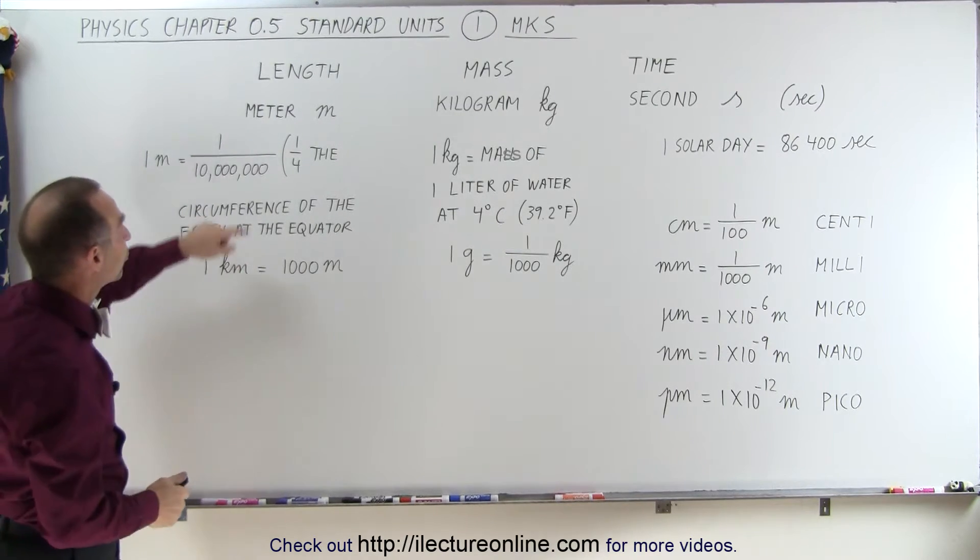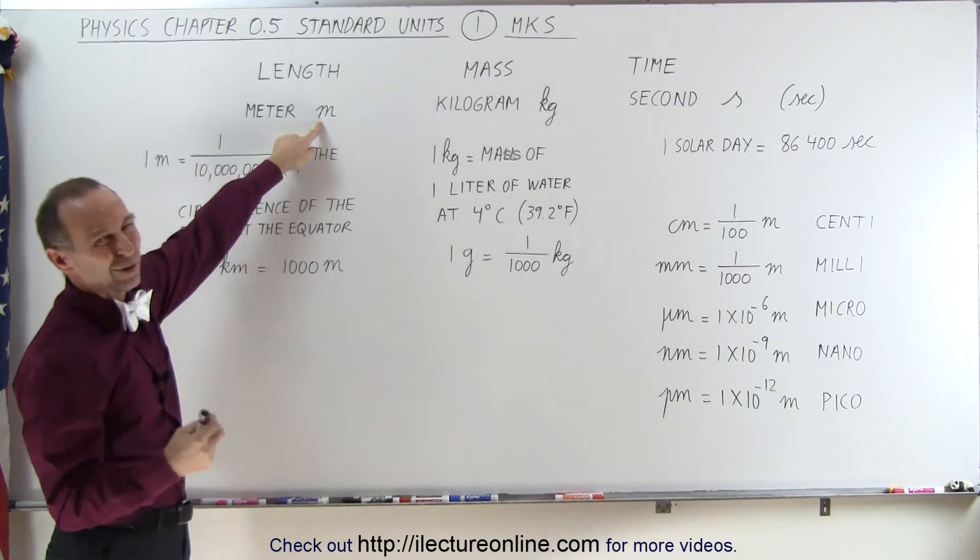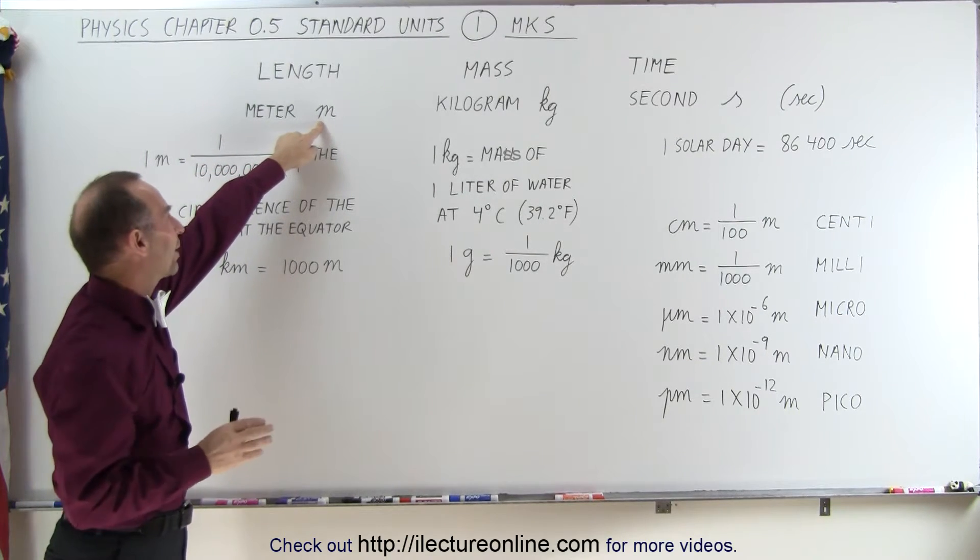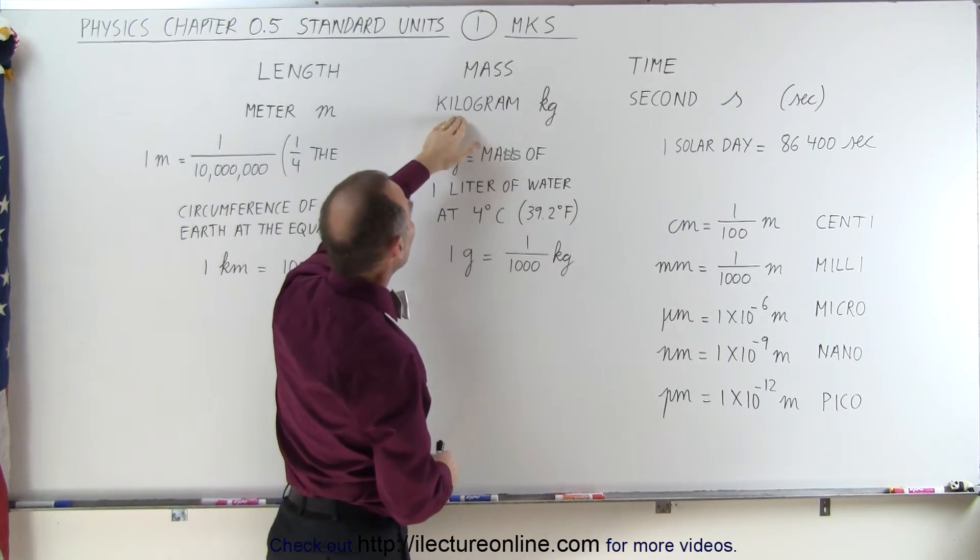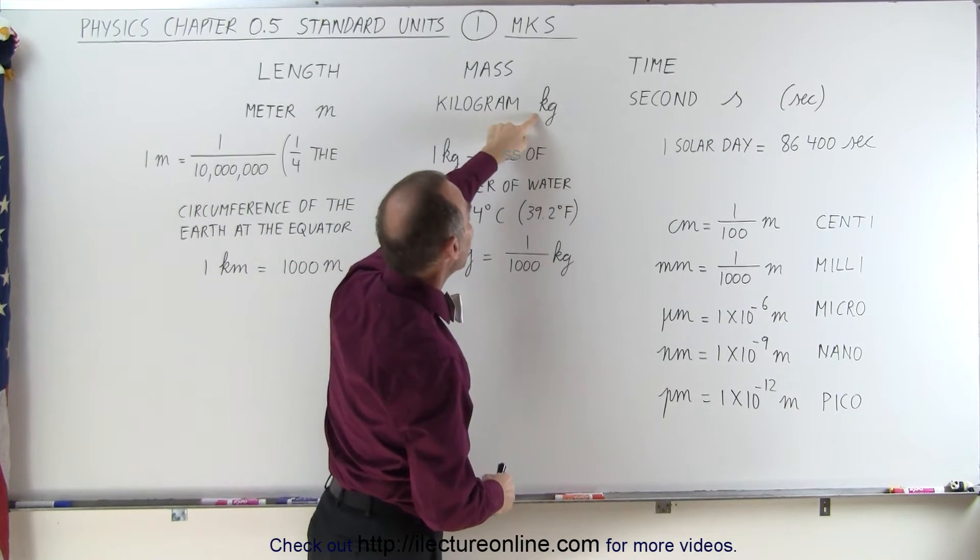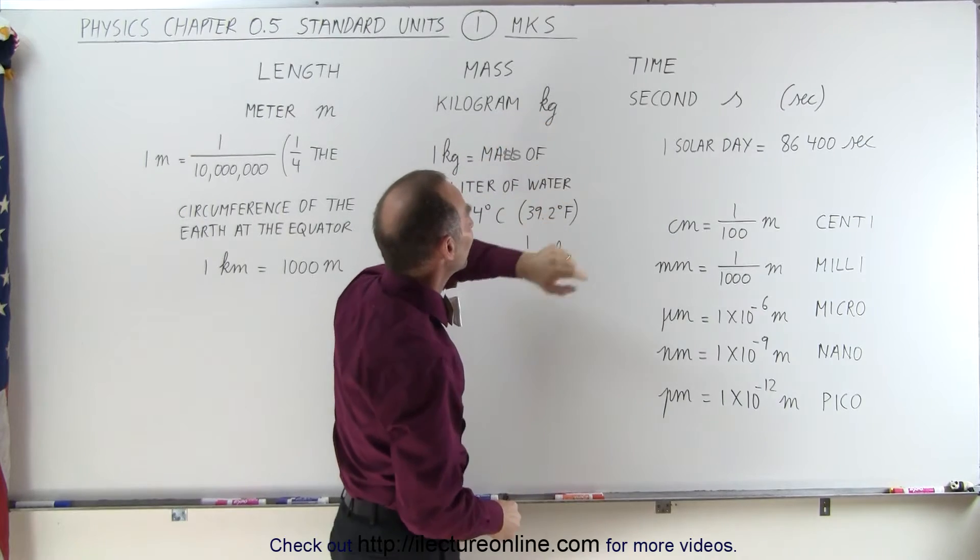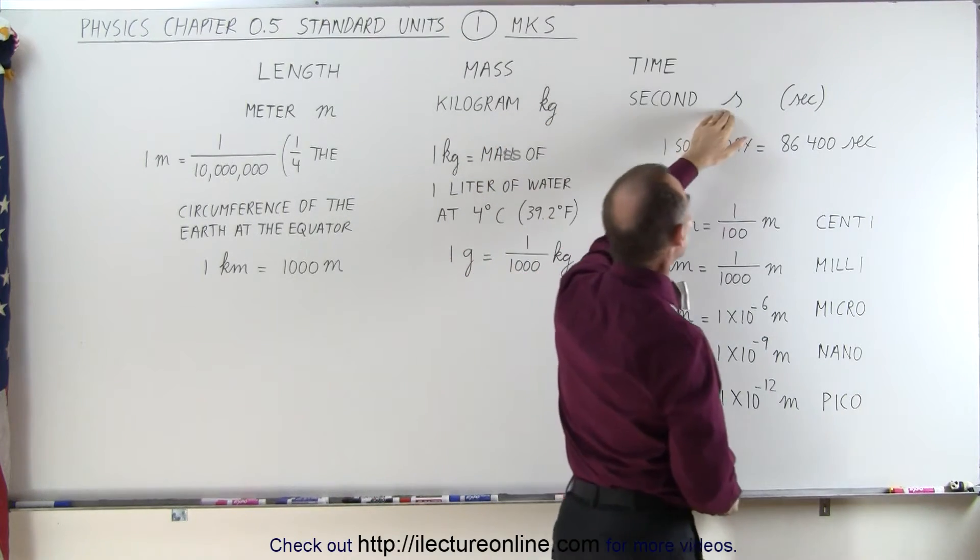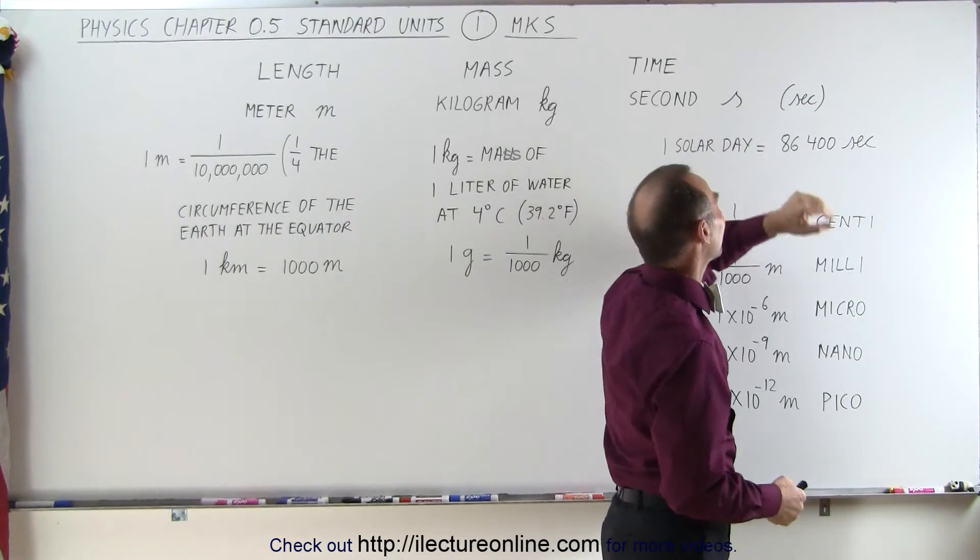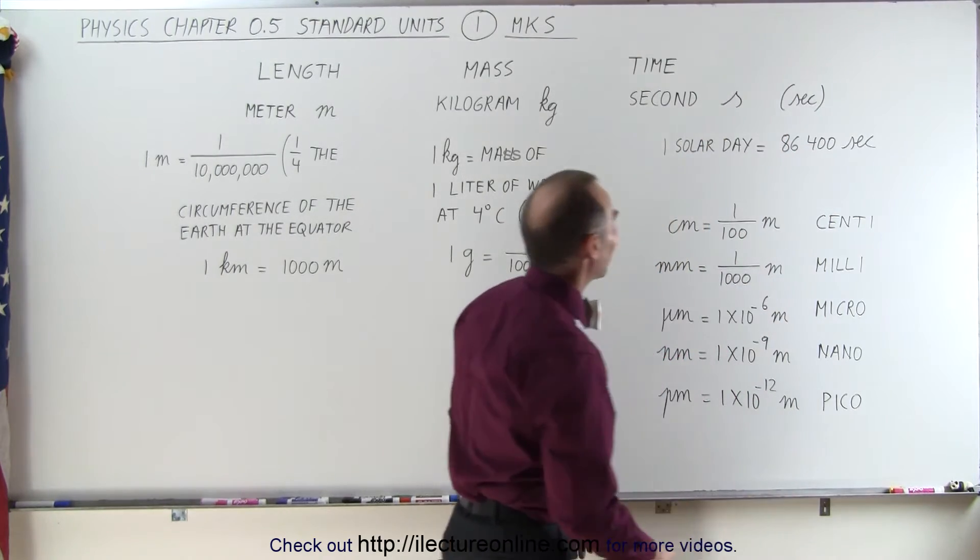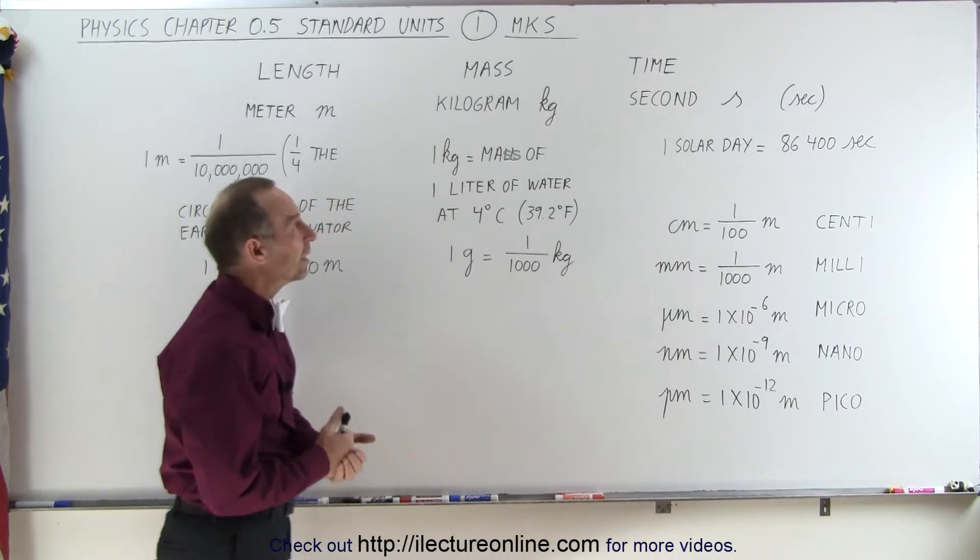The symbols we use for meter is simply M. Sometimes it's confused with M for mass, but try not to have that happen to you. Kilograms is written as KG, K for kilo, and G for grams, and seconds is written as S. As you will have noticed in my videos, I like to write SEC for seconds instead of just the letter S, but officially it should be the letter S.